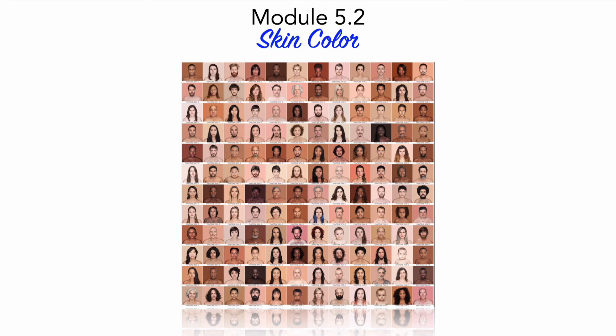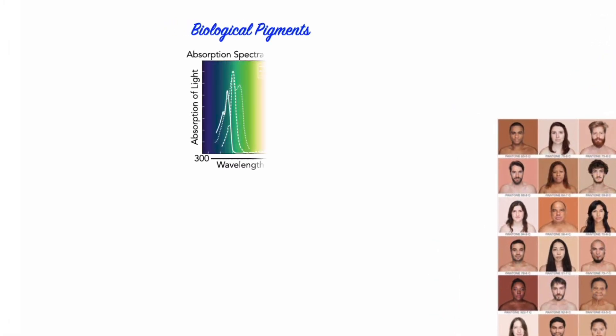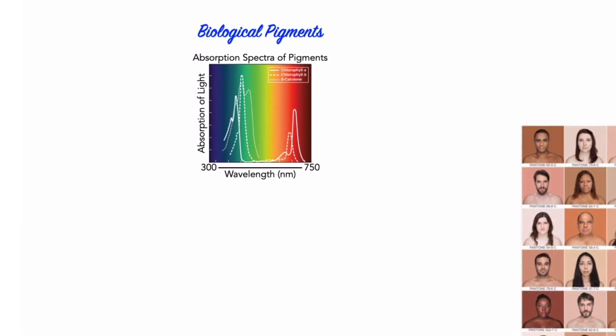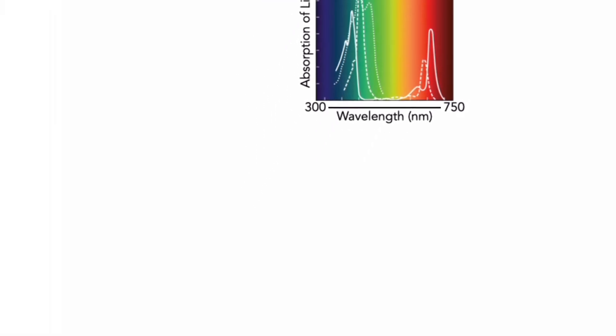To be precise, there's only one class of biological substance that contributes to skin color — namely the class of biological pigments. Biological pigments are substances produced by living organisms that have a color resulting from selective color absorption. That is, biological pigments absorb specific wavelengths of light and reflect others. The reflected wavelengths include the colors we see.